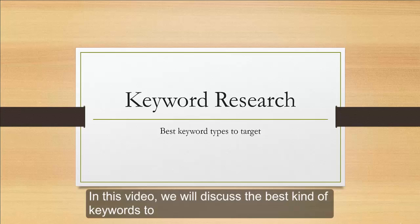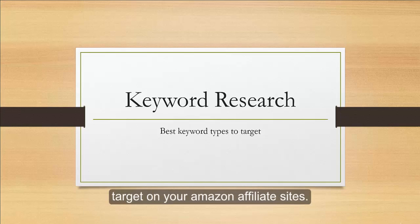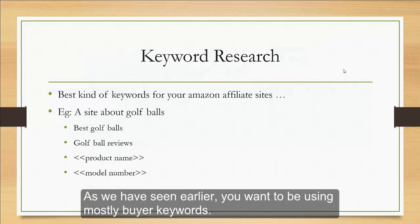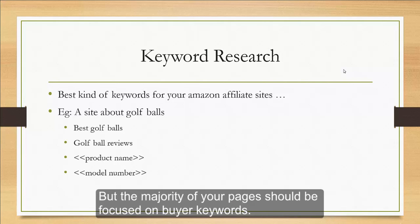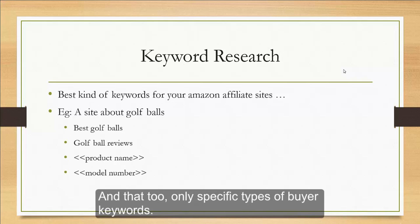In this video, we will discuss the best kind of keywords to target on your Amazon affiliate sites. As we have seen earlier, you want to be using mostly buyer keywords. You can have a few pages focused on non-buyer informational keywords, but the majority of your pages should be focused on buyer keywords.